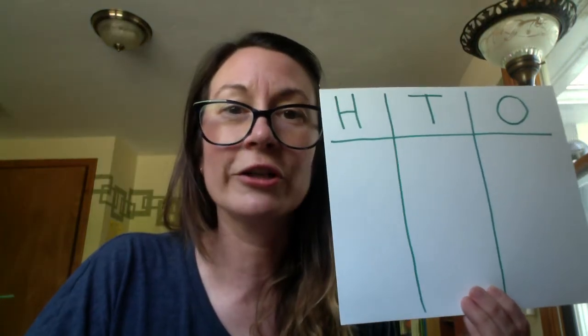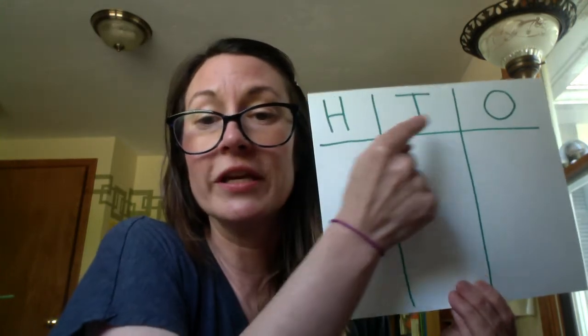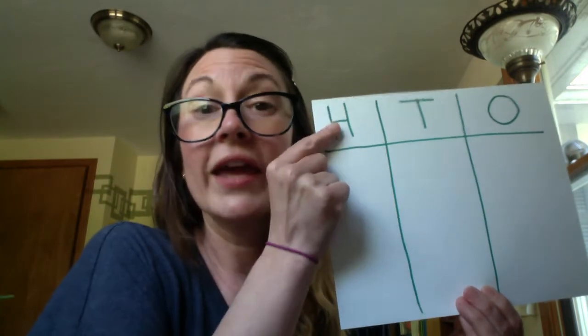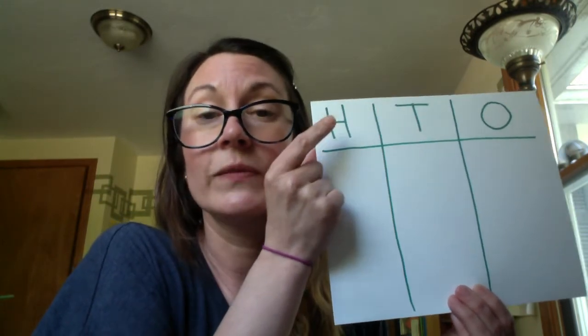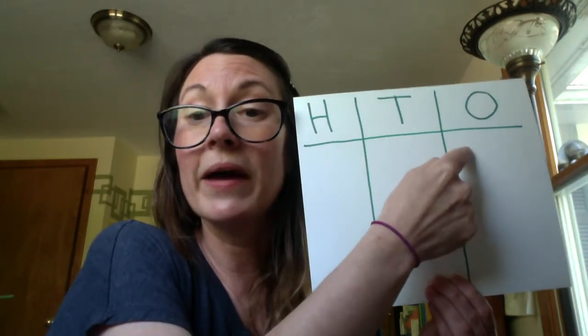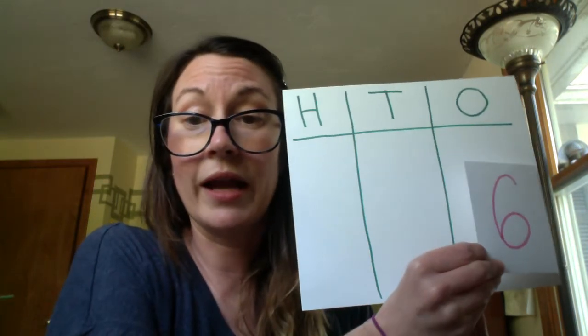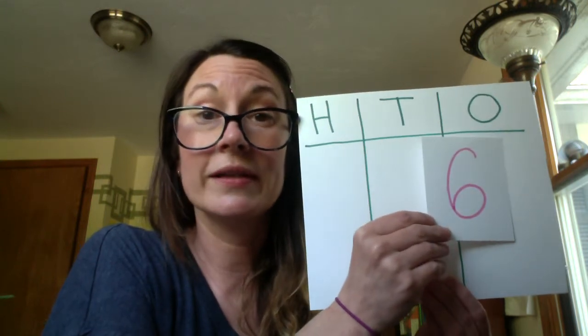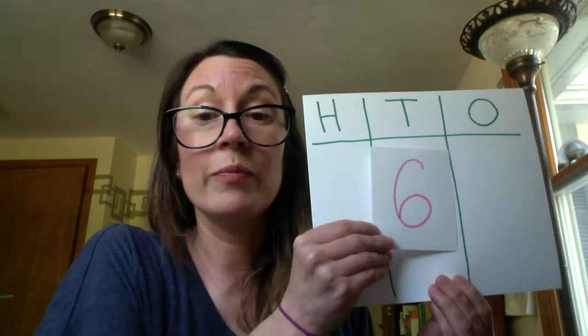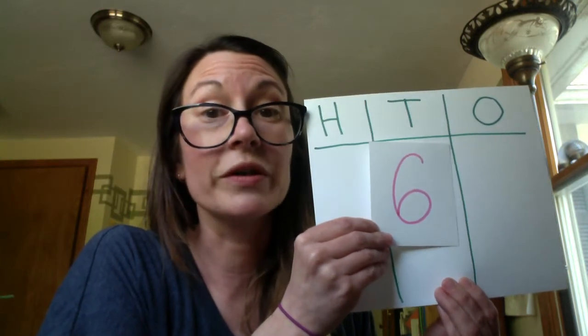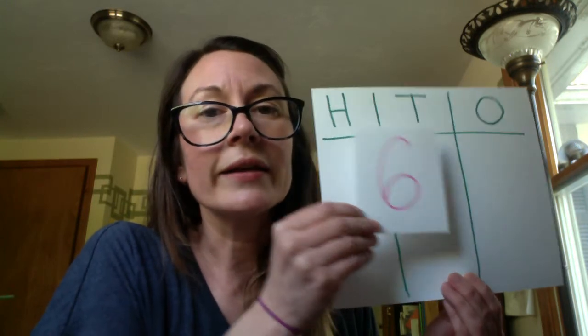Now presto change-o — I've turned my TNO chart into an HTO chart. The H stands for hundreds. So I have my hundreds, my tens, and my ones. But it's the same idea. If I have the digit six and I put it in the ones, I have six ones or six. If I put it in the tens, I have six tens or 60. And if I put the six over here in the hundreds, I have six hundreds or 600.